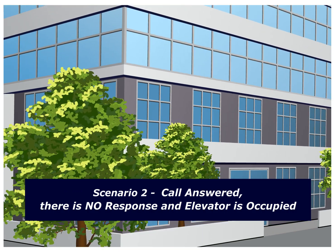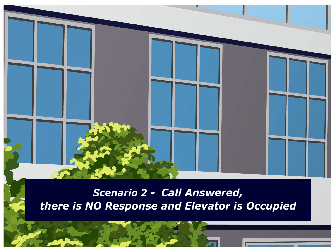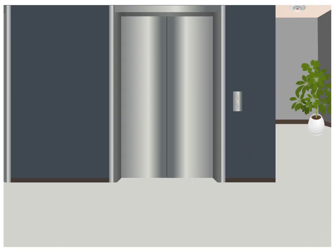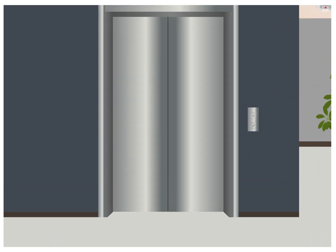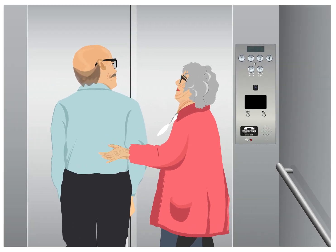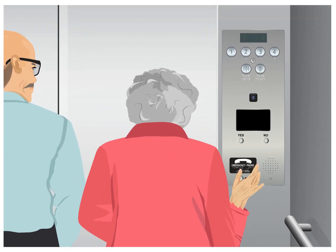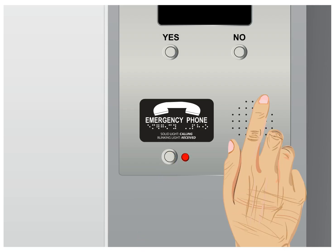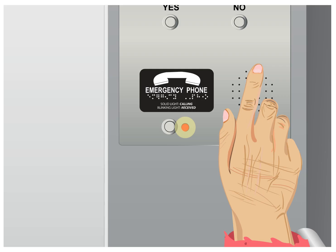Scenario number two: the call is answered, there is no response, and the elevator is occupied. This scenario demonstrates how the system operates when someone is unable to communicate with rescue services. Two hearing-impaired passengers are trapped. The emergency phone button is pressed and the call goes to a monitoring company; the call progress LED will illuminate.